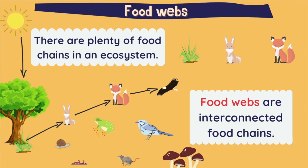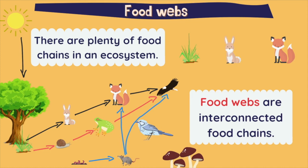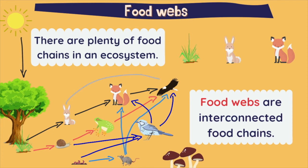In red, we have the snail that takes energy from the plants. The frog eats the snail, and finally the eagle eats the frog. Another food chain starts with the worms that the mouse eats, and then the mouse gets eaten by the fox or the eagle. Also, this little bird eats worms or snails, and it gets eaten by the fox or the eagle.